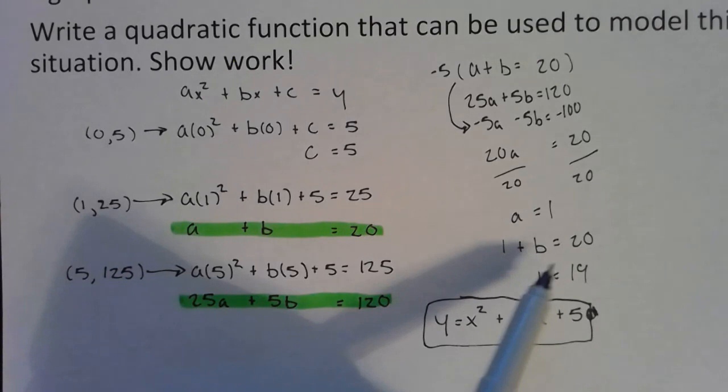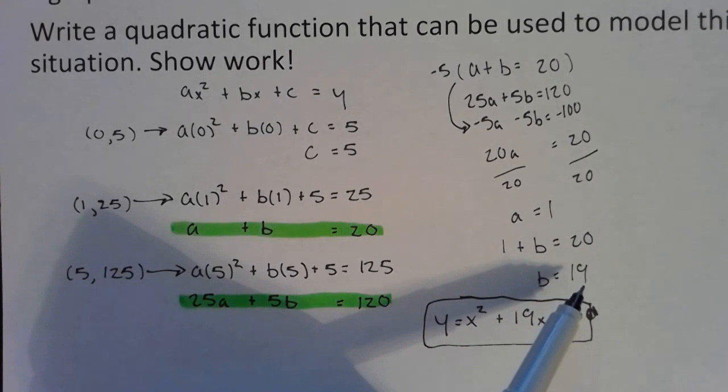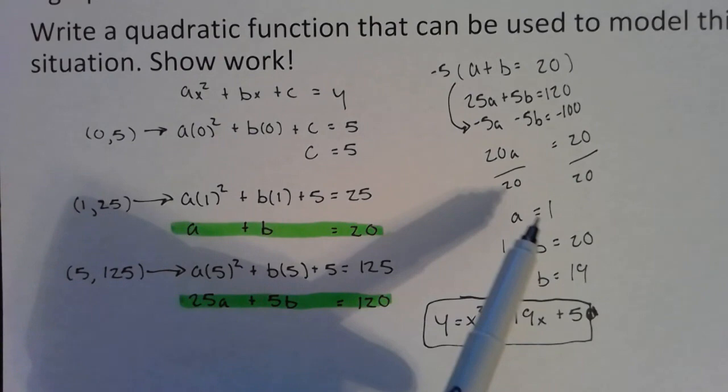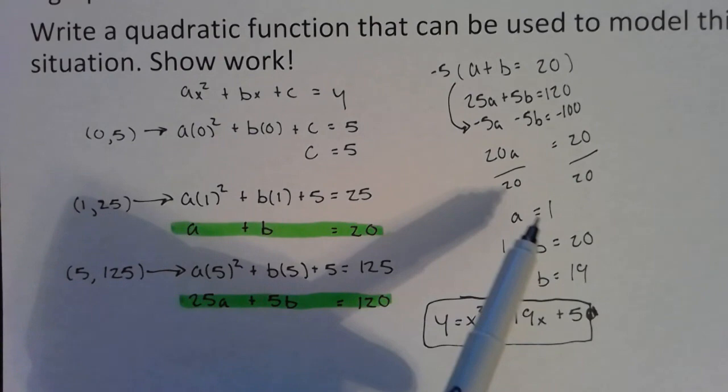Then I plug this a equals 1 back into this equation I had up here: 1 plus b equals 20. So then subtract 1 from both sides again. B equals 19. Don't stop there because remember we're trying to figure out what the quadratic function is. So now we know what a is, we know what b is, we know what c is, so we can go ahead and write our quadratic equation.